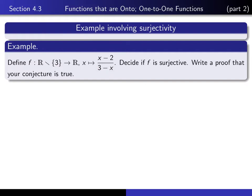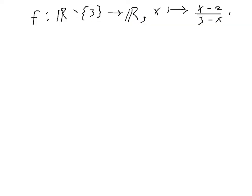The easiest way, I think, to decide if f is surjective, the easiest way to get some intuition about how this function behaves, is to draw the graph of it. So let's do that on another sheet. Here's the function we're considering. It's a function with this domain and this codomain, and f(x) equals (x minus 2) divided by (3 minus x).